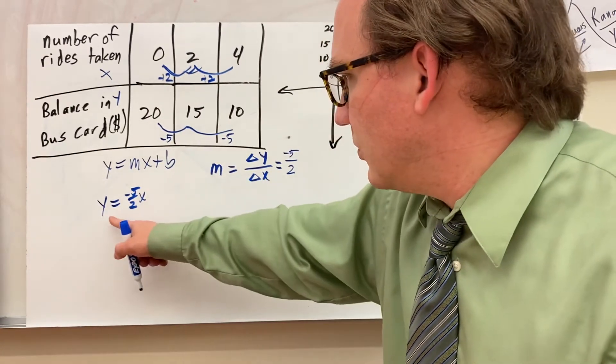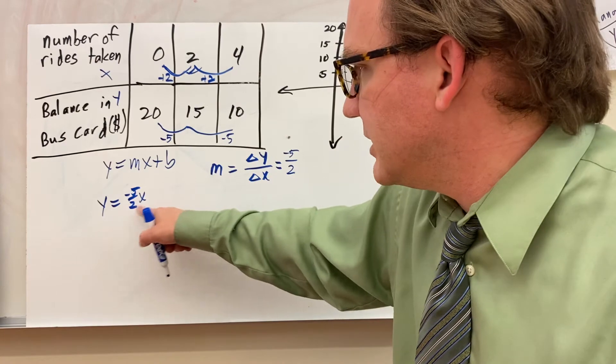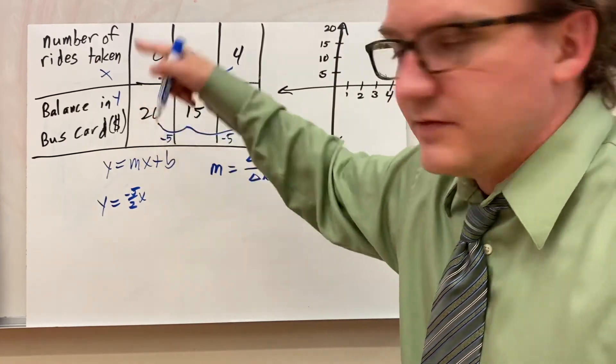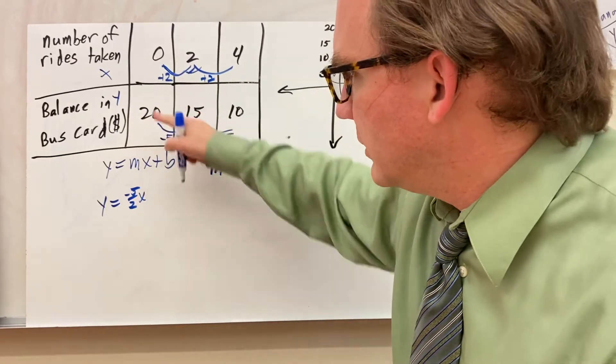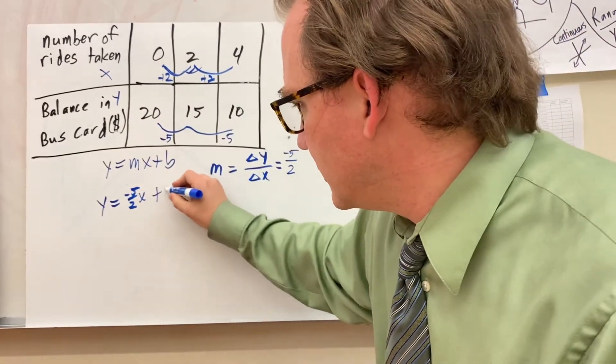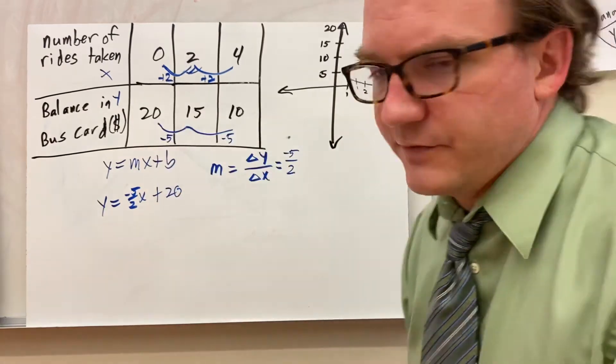b is when x is 0, what is y equal? Well, this data actually gives us that information. When x is 0, y is 20. So it's just plus 20 since the table gives us the information.